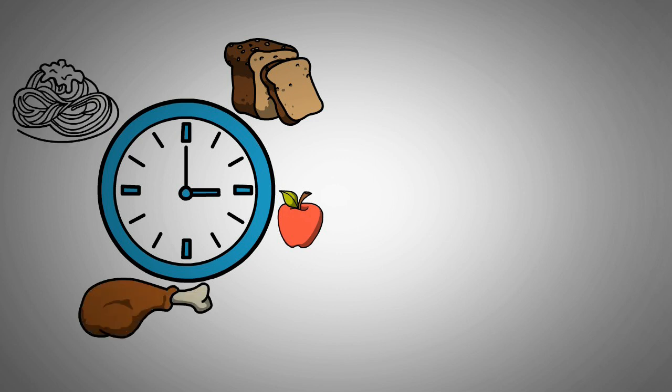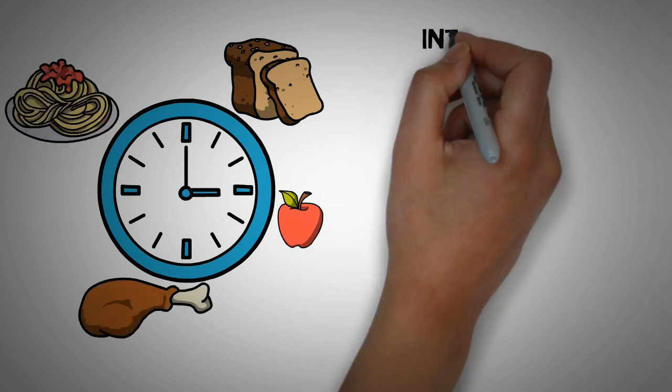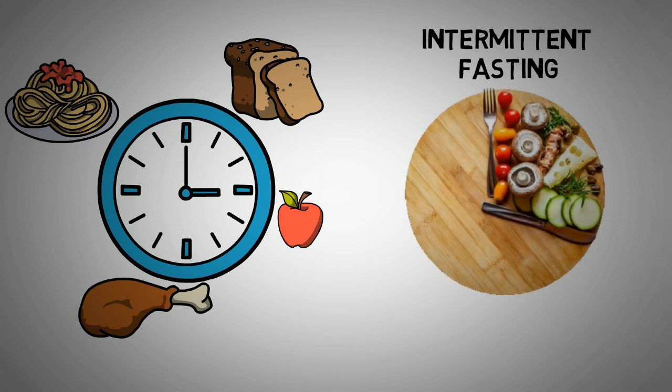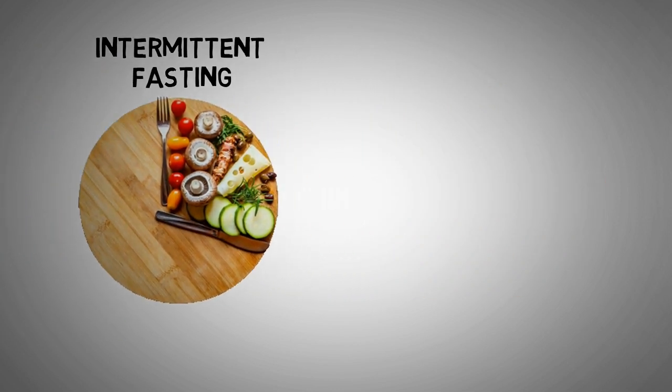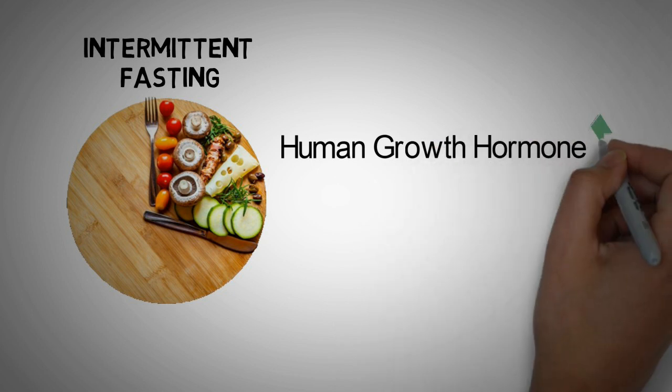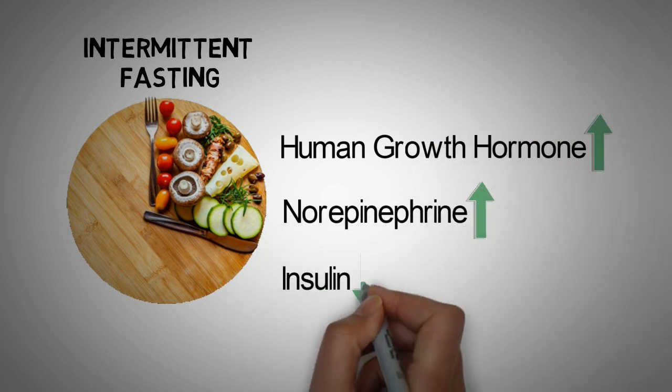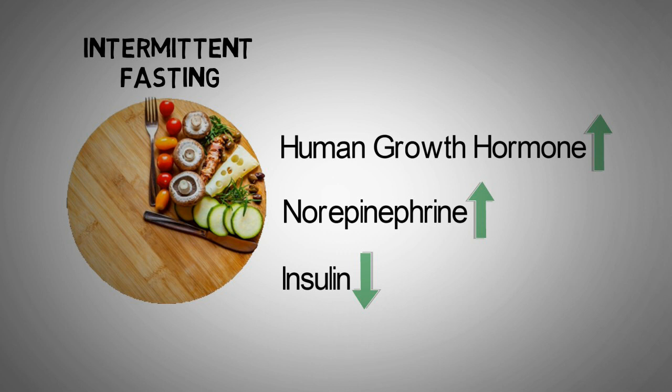Many people believe that eating small, frequent meals will boost your metabolism. But it's actually the very opposite. Intermittent fasting has been shown to speed up your metabolism. Fasting increases fat-burning hormones like the human growth hormone or norepinephrine, and lowers fat-storage hormones like insulin. Studies found that alternate-day fasting could decrease insulin by 57%, but more than doubled human growth hormone levels and norepinephrine levels.